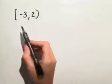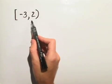For our next example, we're asked to express the interval in set builder notation and graph the interval on a number line. We have the interval from negative 3 to 2.